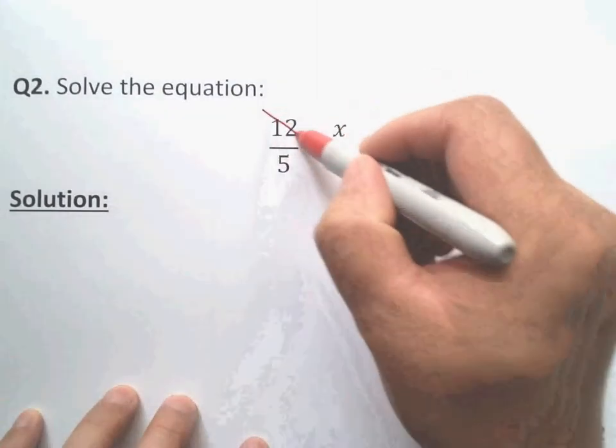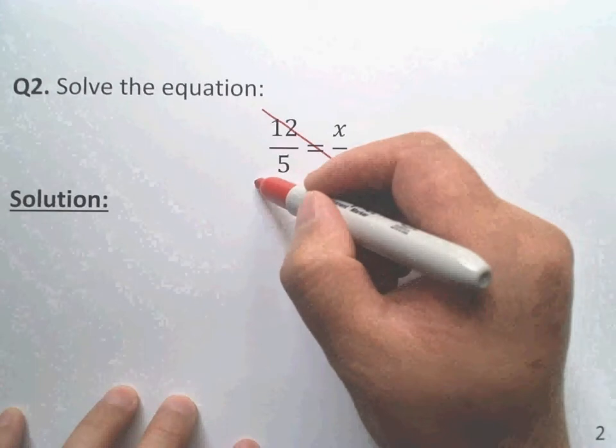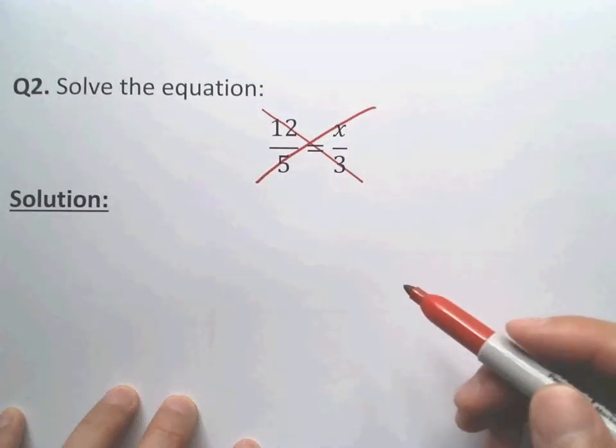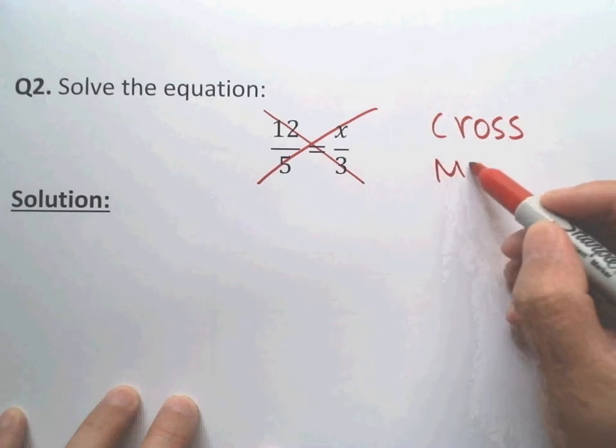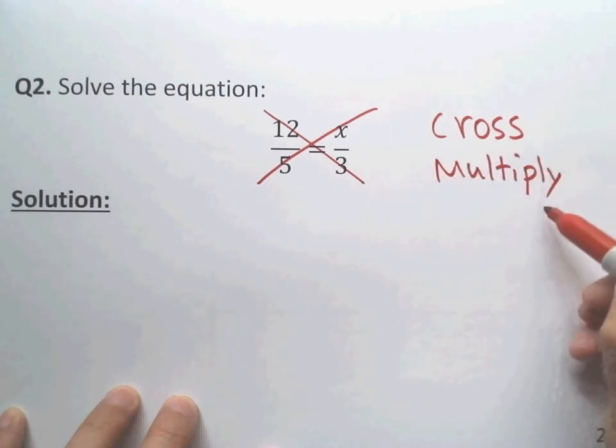Let me cross. These times we get 36. This cross we get 5x. That we say is by cross multiply. That's all.